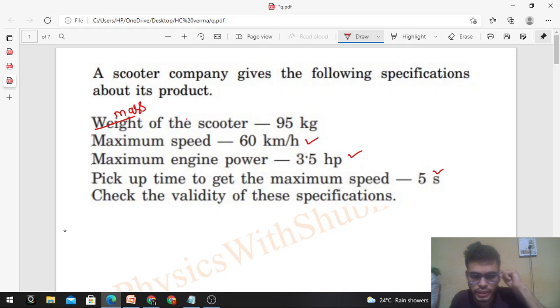Maximum engine power is given 3.5 hp. Pickup time to get the maximum speed is given 5 seconds. So check the validity of these specifications. If you know the engine power, you can find out the maximum speed the scooter can attain in 5 seconds.